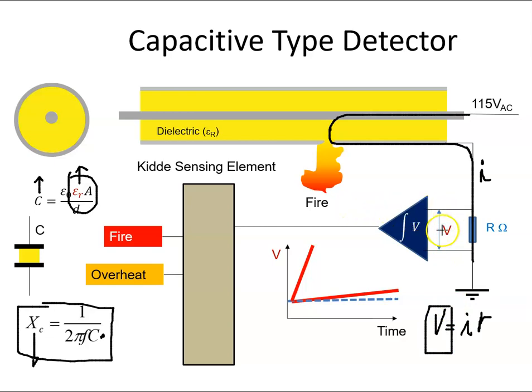So if we monitor that voltage and put it through an integrator, if we had a fire, the temperature will rise very sharply to a large voltage. That'll rise very quickly if we look at that rise time. So if we integrate that, we'll get a large number, let's say 30.